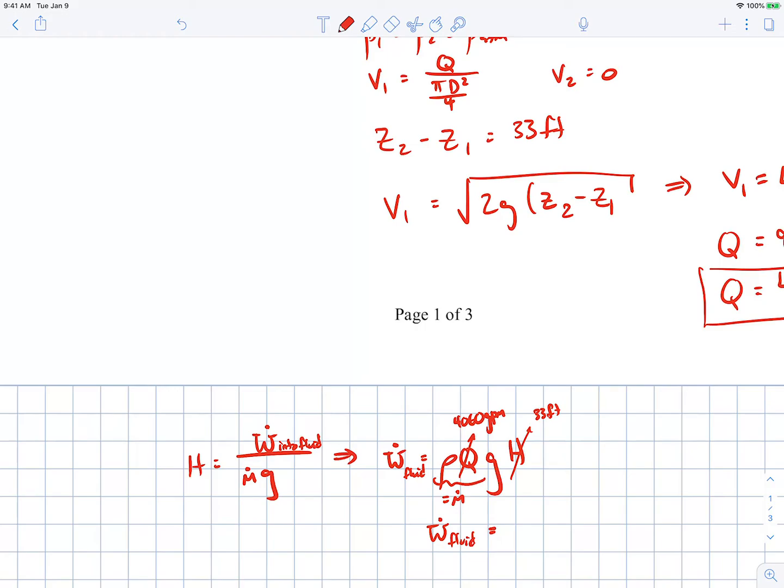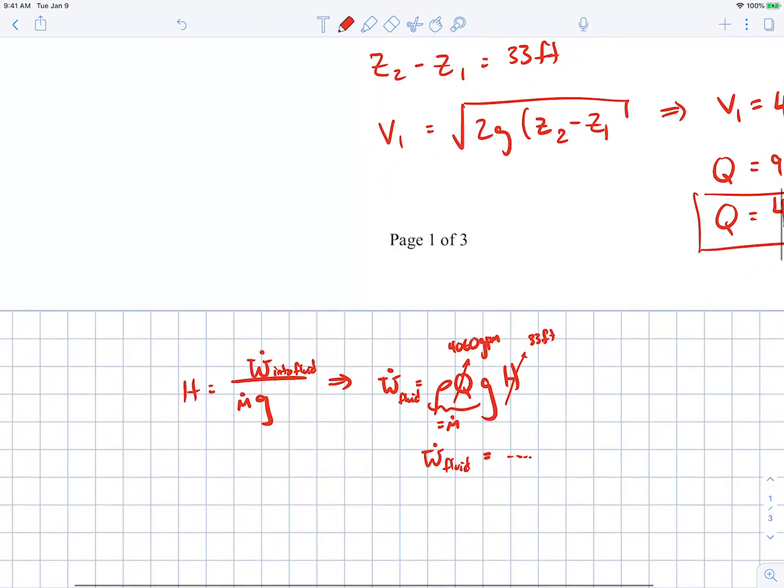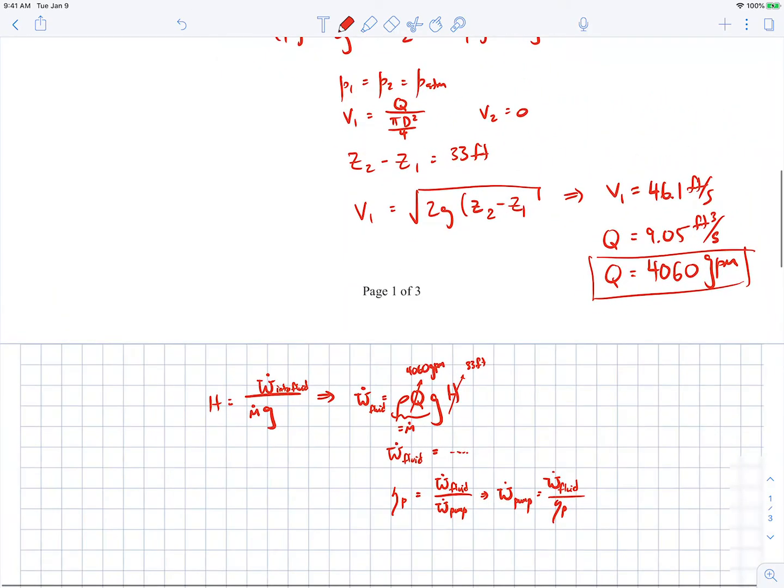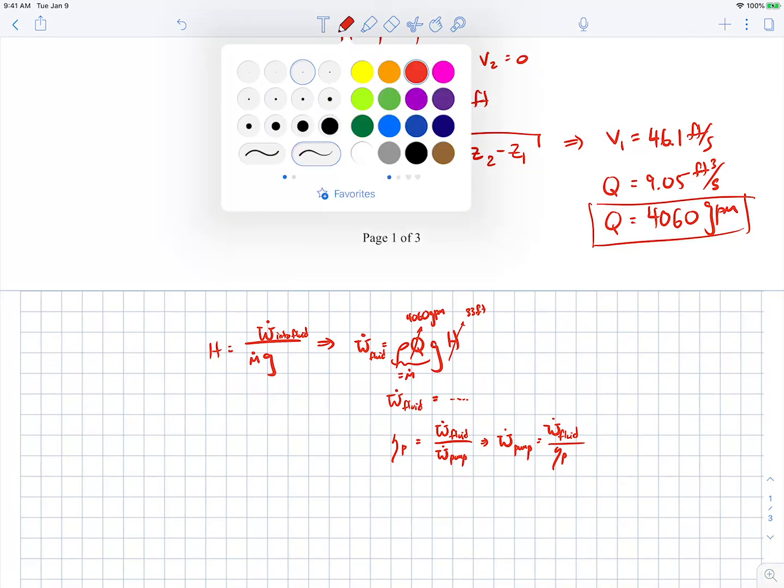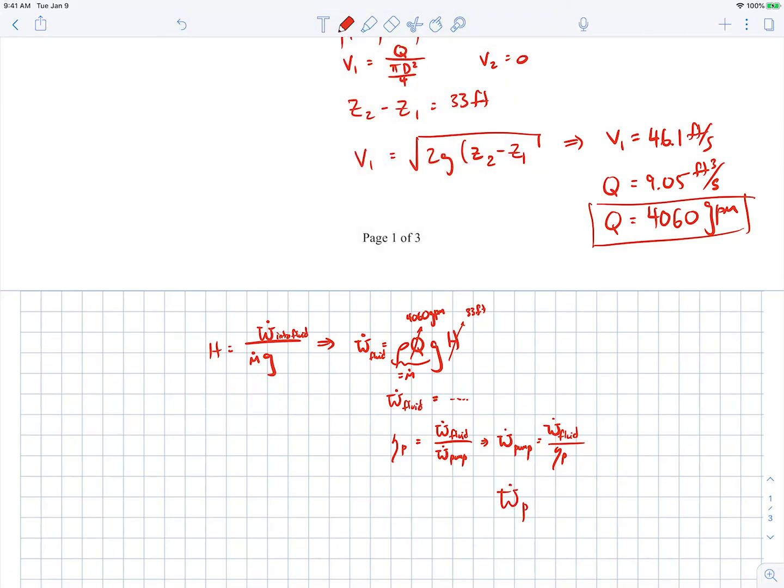So we can then calculate what the power into the fluid is. That's the power into the fluid. If you want the power into the pump, you have to make sure you use the efficiency. So the efficiency of the pump is going to be the power into the fluid divided by the power into the pump. So you can find the power into the pump is the power into the fluid divided by the pump efficiency.